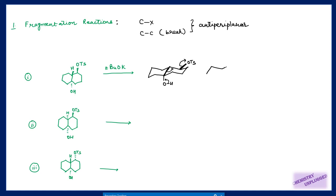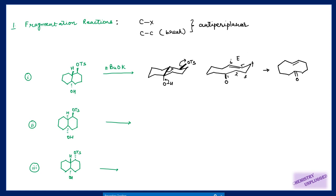We can write the product like this: I will get a double bond at this position, and here I have a carbonyl group. This is carbon one (where the carbonyl is), two, three, four, five, and six — and this is the E-alkene. So I place the double bond here; it is also E in nature. Using the stereochemistry of the starting material, you can find out the stereochemistry of the final product if you correctly follow the fragmentation process.